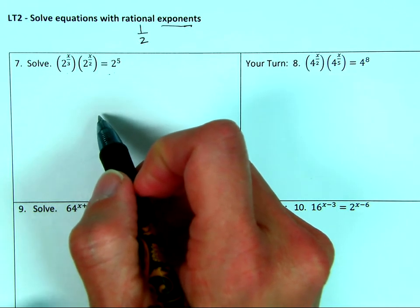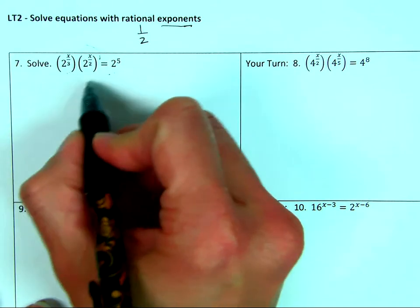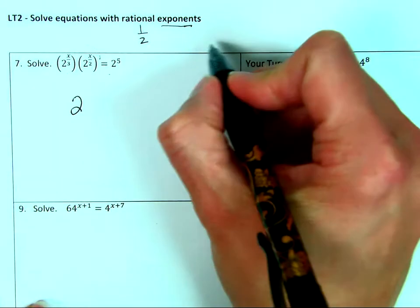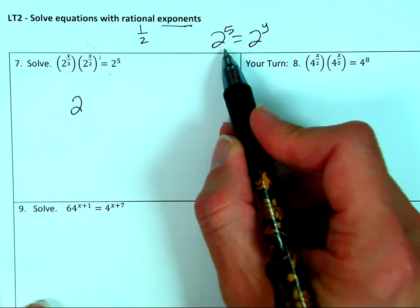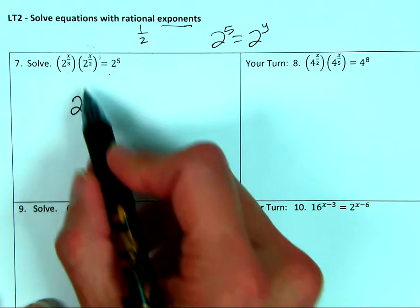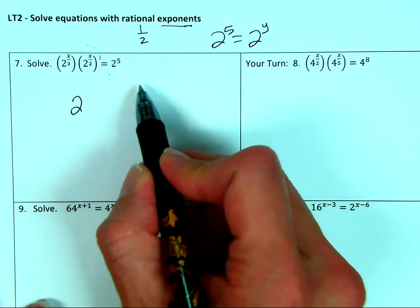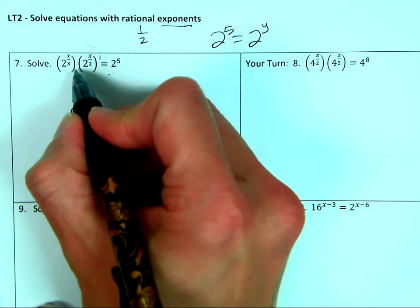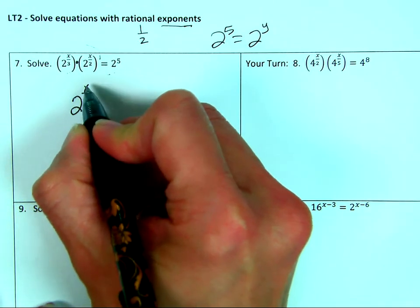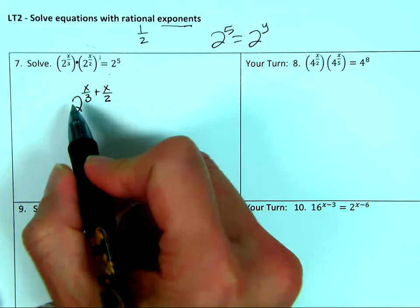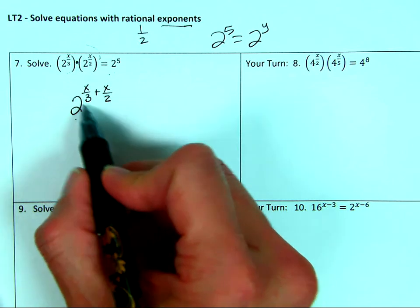Step number one: bases are the same. Step two, I'm going to combine these so that I only have two to some power. Because if I had two to the fifth equals two to the y, then I would know y is five — because equals means they're the same. So I try to get it where it's just one variable over one base equals a base with some number. When I multiply two bases, I add their exponents. So I'm going to have x over three plus x over two — I rewrote this with one base and added their exponents.